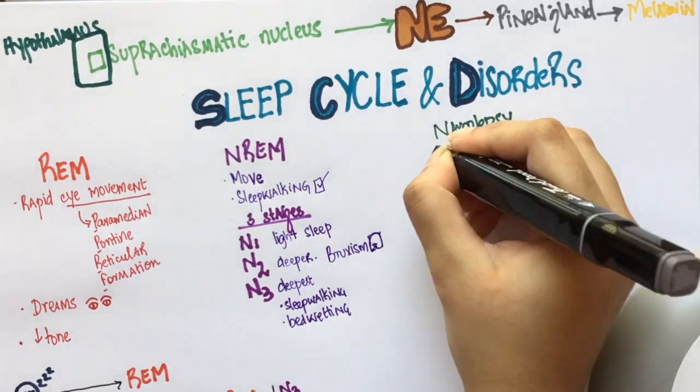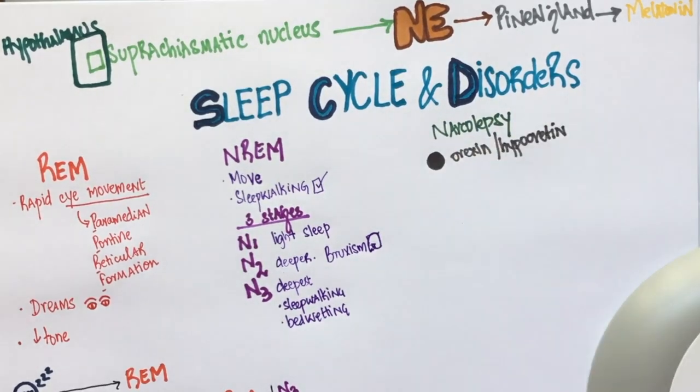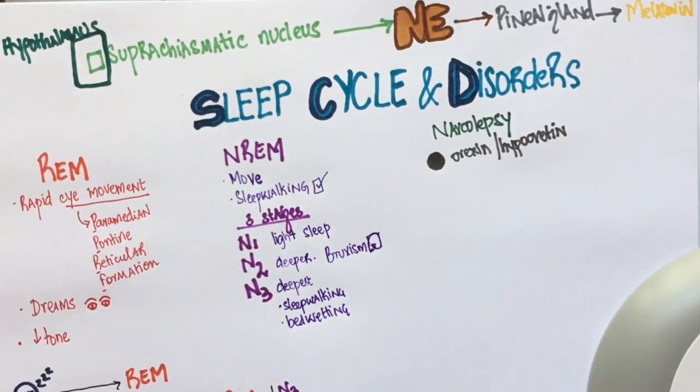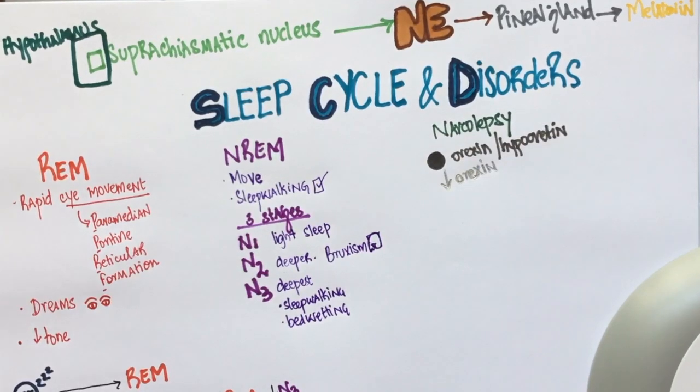Orexin is also known as hypocretin. It is produced by the hypothalamus to regulate our sleep cycle. In narcolepsy, there is very little orexin production, which leads to this sleep disorder.